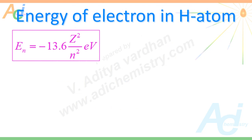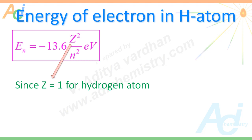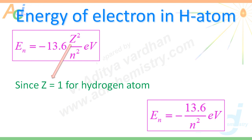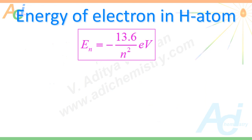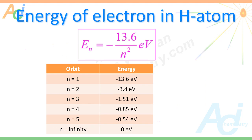Now we will apply this equation to find the energy of electron in hydrogen atom. For hydrogen atom, the atomic number Z is equal to 1. Hence, we can modify this equation into En = −13.6 / N² electron volts. Upon substituting the principal quantum numbers for N, we get energy values for electrons in different orbits, tabulated as shown on the screen. For the first orbit, N = 1, and the energy is −13.6 eV. For the second orbit, the energy is −3.4 eV. This clearly indicates the energy of the electron increases as we move away from the nucleus and becomes 0 at the infinite orbit.